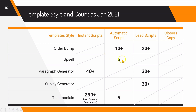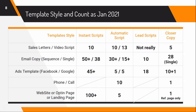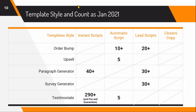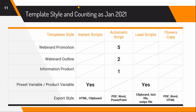For paragraph generators, survey generators, and testimonials, you can see the differences in the table. With this comparison you can decide, depending on what you're looking for, which product to research further. For webinar and promotion content, Automatic Script is basically the go-to. If you work with many products and want to keep presets or variables, Instant Script or Lead Script have that feature. The other two do not. For export style, it's less of a deciding factor, but worth noting.